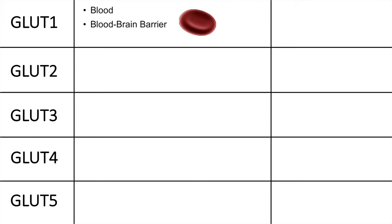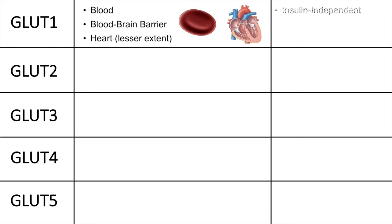For GLUT1, these are found in the blood — in red blood cells, or erythrocytes. They're also found in the blood-brain barrier and in the heart, though the heart has very minimal amounts of GLUT1. The main key point for GLUT1 is that they are insulin independent, so red blood cells never need insulin to uptake glucose — they always use glucose even without insulin present.